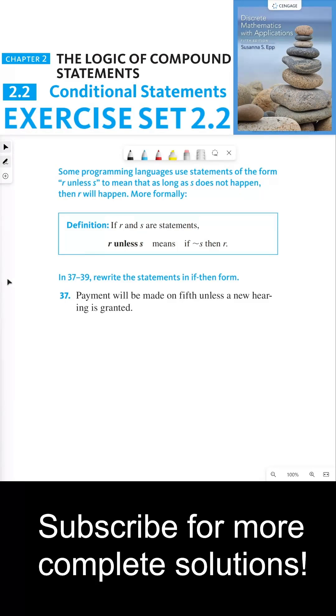Some programming languages use statements of the form R unless S to mean that as long as S does not happen, then R will happen. More formally, if R and S are statements, R unless S means if not S, then R.